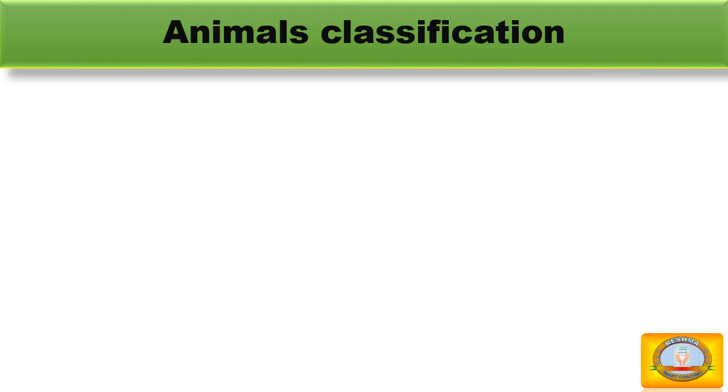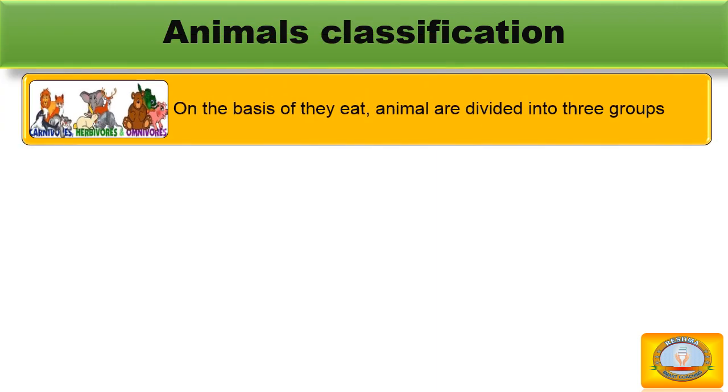Animals classification. We need food to grow and stay healthy. Animals also need food to grow and to remain strong and healthy. Different animals have different feeding habits. On the basis of what they eat, animals are divided into three groups.